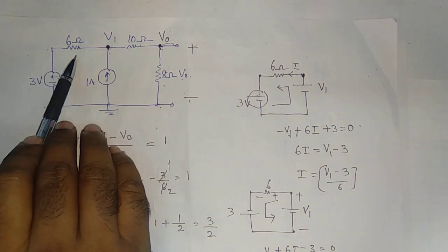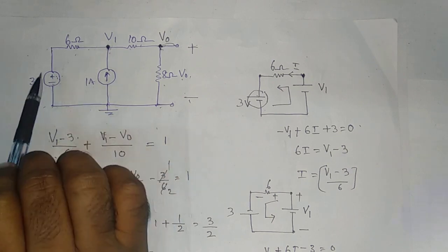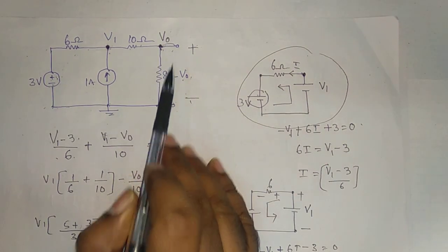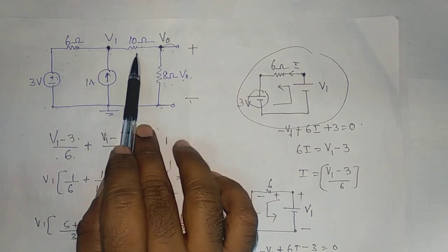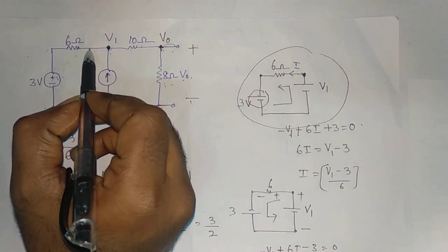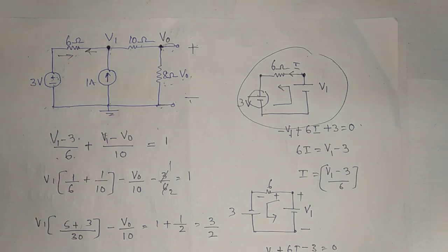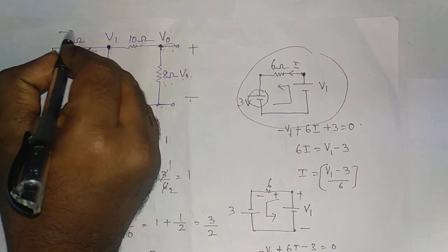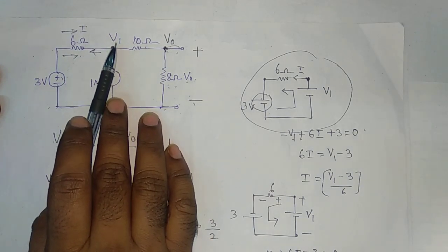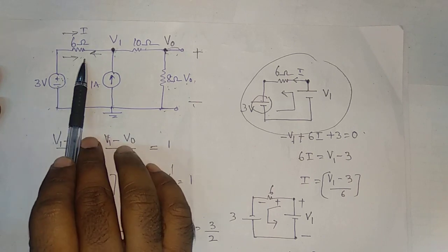Substituting V0 equals 3 volts: 8V1 equals 18 into 3, so V1 equals 27/4 volts. Now we have V1 and V0. To find the current, we use the circuit. The current through the 6-ohm resistor: i equals V1 minus 3 by 6. We calculate the current direction. If the assumed direction is opposite to actual flow, the result will be negative.